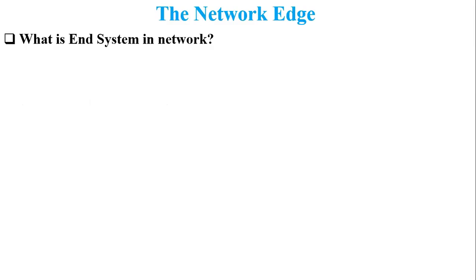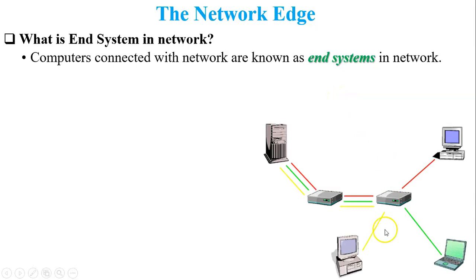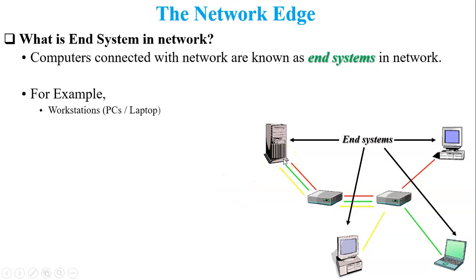What is an end system in a network? The last device which is connected with the network is called an end system. In computer network, a computer is the end system, so computers connected with the network are known as end systems. In this figure you can see the last devices — two PCs, one laptop, and one server — these are called end systems. All end systems are connected with each other through intermediate devices such as routers, switches, or hubs.